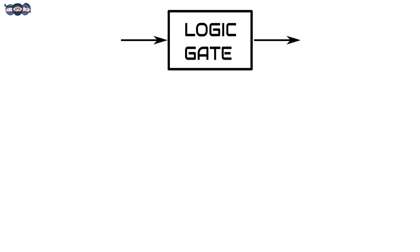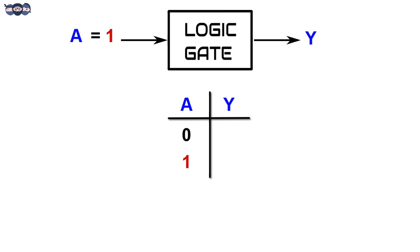Consider a logic gate with a single input A. It can take values 0 or 1. There are two input combinations for one input variable.